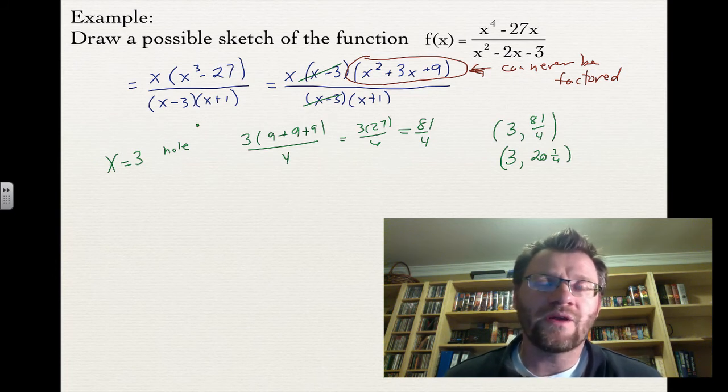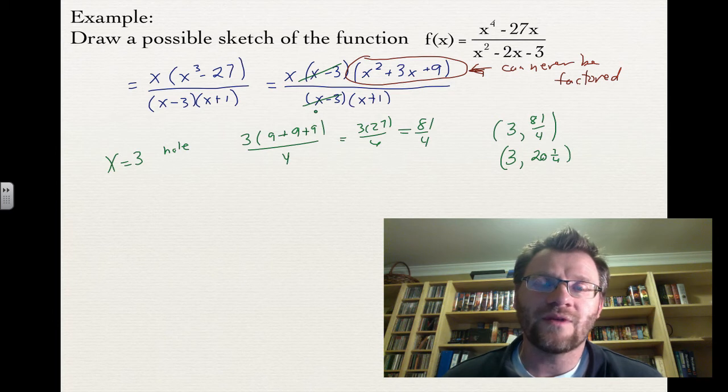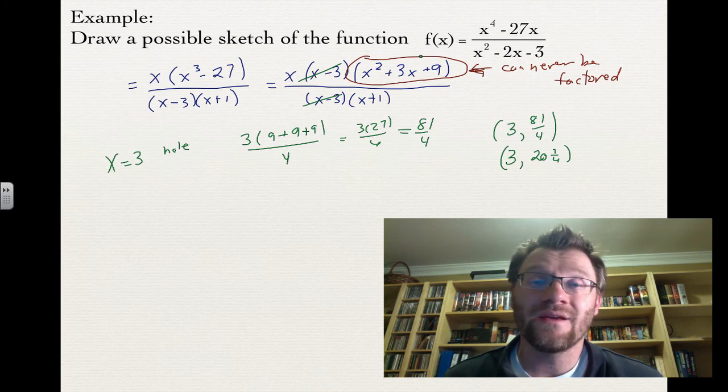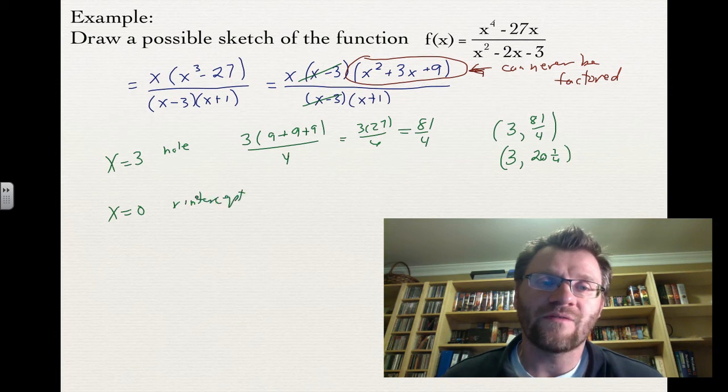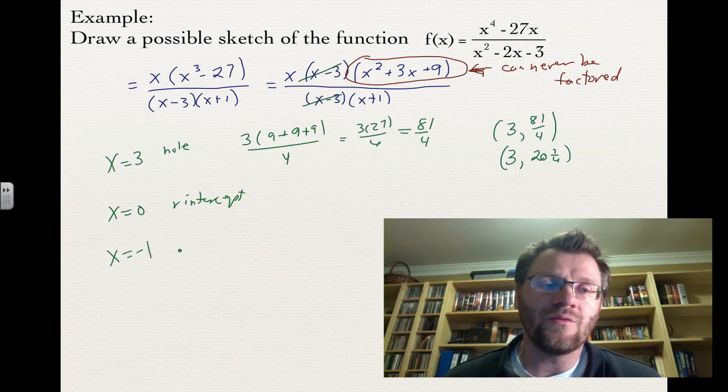We also need to find our x-intercepts and vertical asymptotes. Because this circled red part can't be factored, it won't correspond to any x-intercepts. But there's a factor x in the top, meaning x equals 0 is an x-intercept. Because it's a factor in the bottom, x equals negative 1 will be a vertical asymptote.